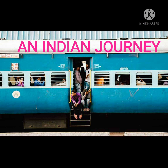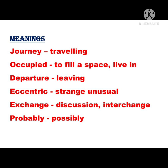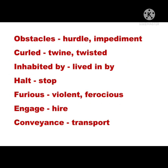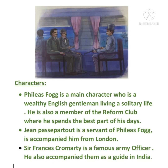From 'Around the World in 80 Days,' an adventure novel by the French writer Jules Verne. Let's learn meanings before learning the story in detail. Journey means traveling. Occupied means to fill a space. Departure means leaving. Eccentric means strange or unusual. Exchange means discussion or interchange. Probably means possibly. Obstacles means huddle or impediment. Curled means twisted. Halt means stop. Furious means violent. Conveyance means transport.